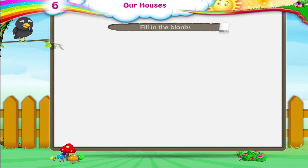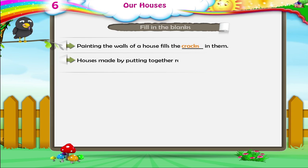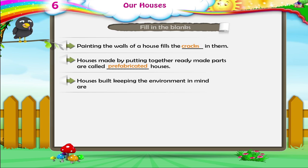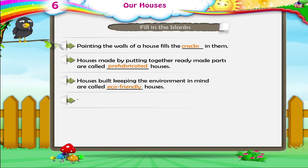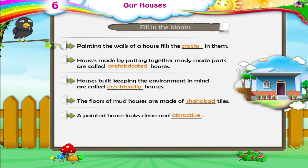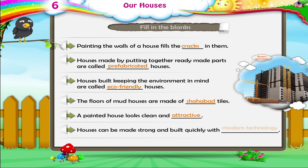Can you fill in the blanks? Painting the walls of a house fills the cracks in them. Houses made by putting together ready-made parts are called prefabricated houses. Houses built keeping the environment in mind are called eco-friendly houses. The floors of mud houses are made of Shahabad tiles. A painted house looks clean and attractive. Houses can be made strong and built quickly with modern technology.